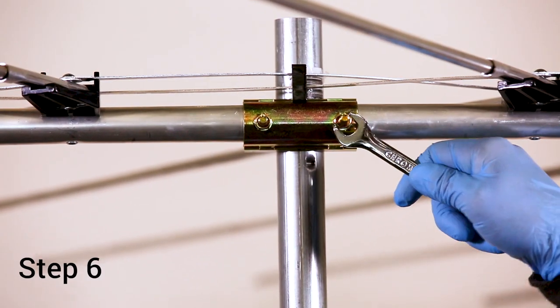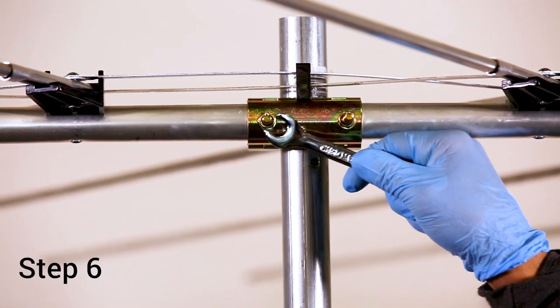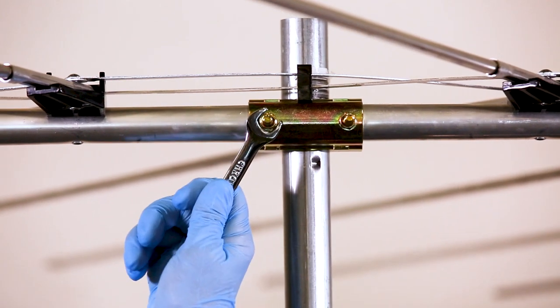Step 6: Fit your antenna mast through the U-bolt, then with a wrench, securely tighten the nuts.